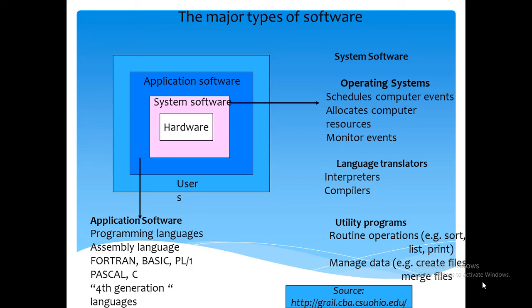This image helps us understand more about software layers. On the inner side we have the hardware, and then on the outer circle we have the system software, then application software, and then the users on the outermost layer. So at the center we have the hardware, then the system software takes over, followed by application software, and finally the users.